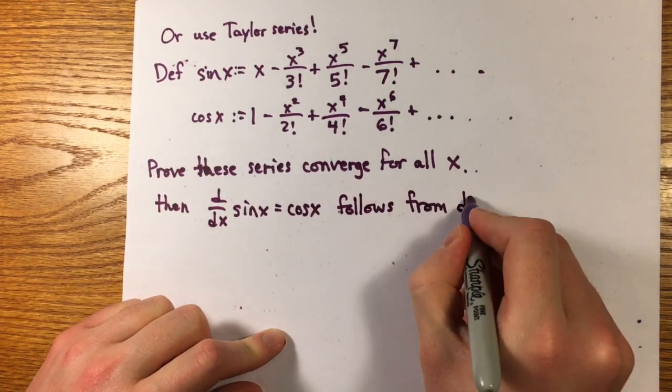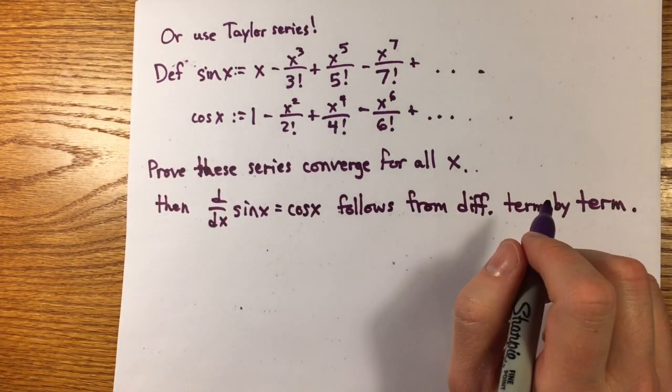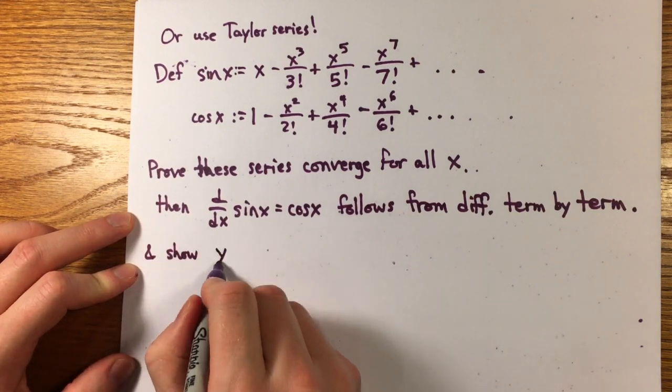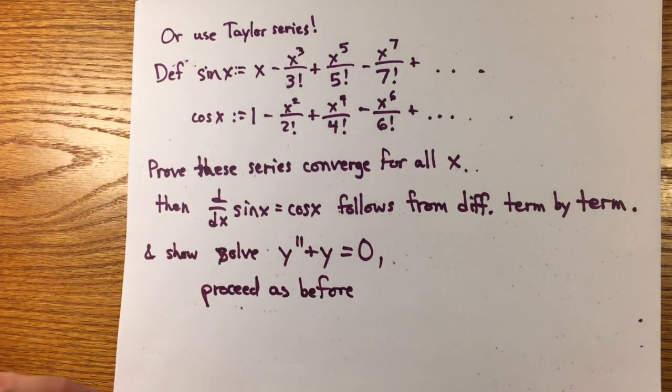And differentiating term by term gives that the derivative of sine is cosine, and that both satisfy y double prime plus y equals 0, which reduces establishing their properties to the differential equation definition.